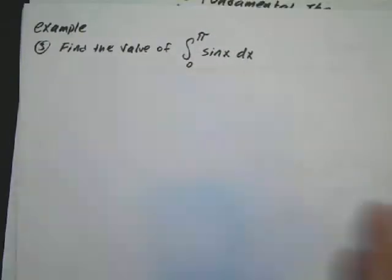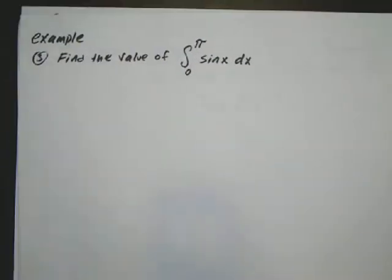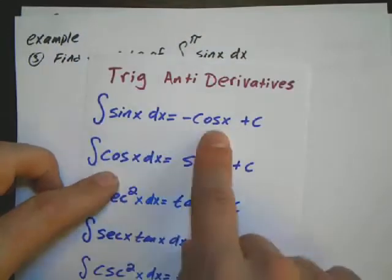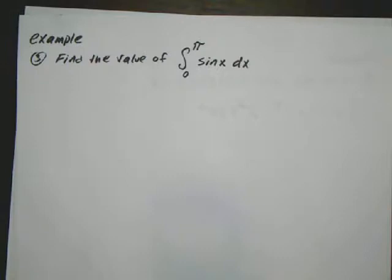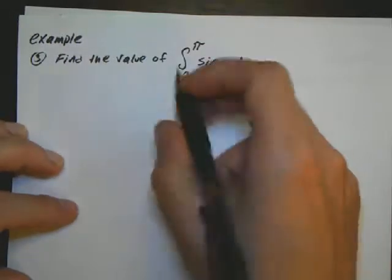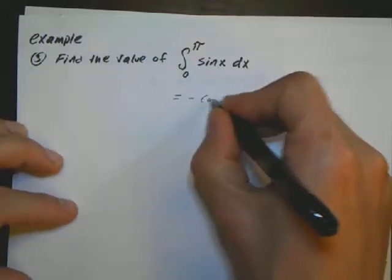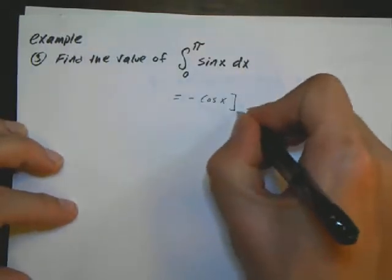Alright, example number 3 deals with the trig function. Let's see, a simple one. And just looking up the antiderivative for sine, it's going to be negative cosine. So this antiderivative is going to equal negative cosine of x.